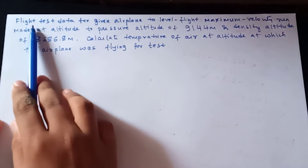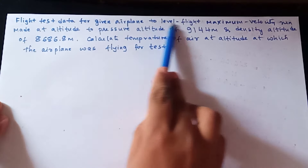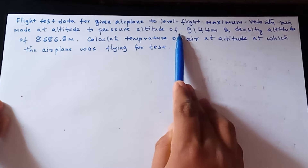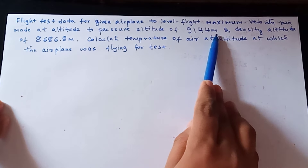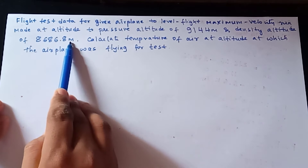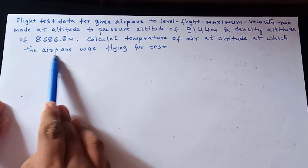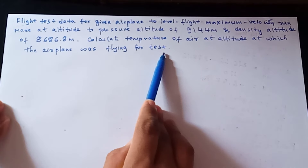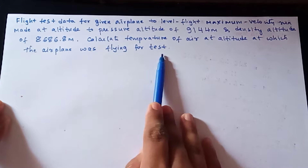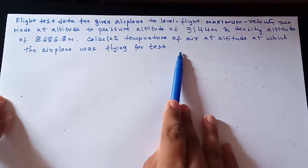Problem 2 (homework): Flight test data for a given airplane in level flight maximum velocity run was made at a pressure altitude of 9144 m and density altitude of 8686.8 m. Calculate the temperature of the air at the altitude at which the airplane was flying. Post your answers in the comment section and this problem will be solved in the next tutorial.